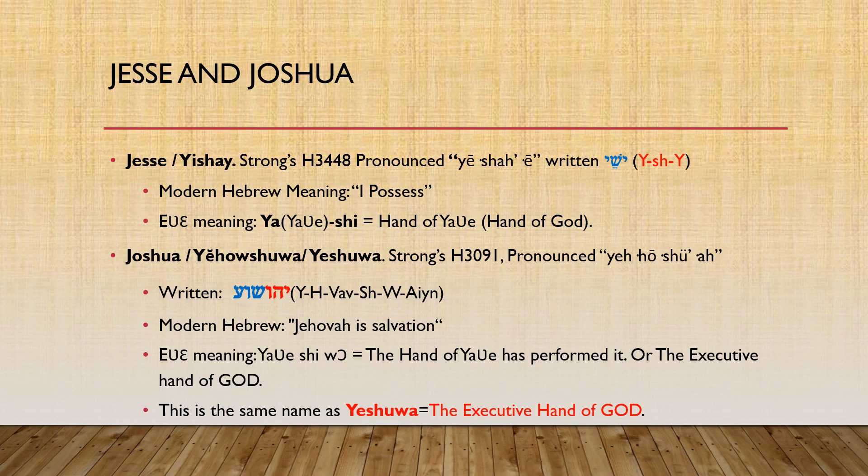Let's get into some names. Let's look at the names of Jesse and Joshua. Strong's H3448 pronounces Jesse as Yishai. The consonantal Biblical Hebrew text has it as Yod-Shin-Yod, which is Y-S-H-Y. The meaning given it is 'I possess.'